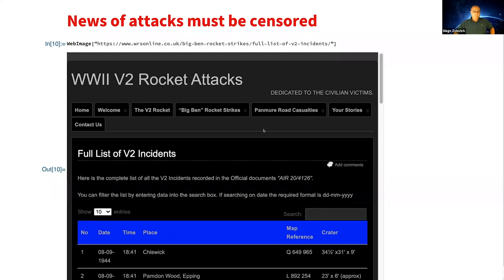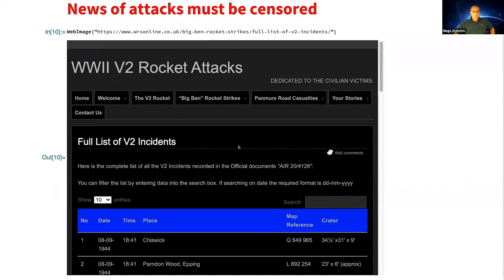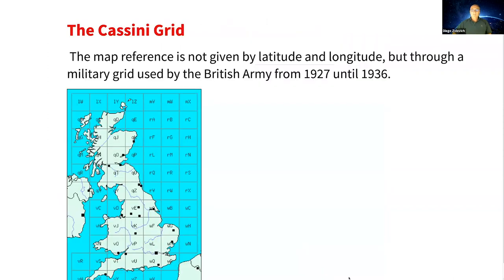To do the analysis and bring data into Mathematica, I found a website listing all the rocket strikes, compiled by the Ministry of Defense after the war in official document AIR 24126. The first issue was the map reference — it has a strange code. That code is the Cassini grid; military maps from 1927 to 1936 were based on this grid, with major grid squares of 250 kilometers and small boxes of 100 by 100 kilometers, with numbers indicating northings and eastings from the southwest corner.